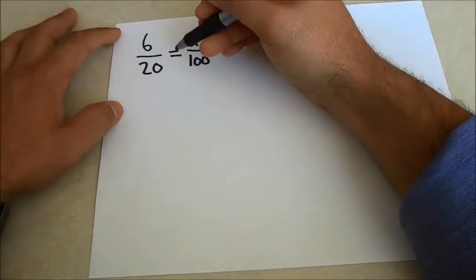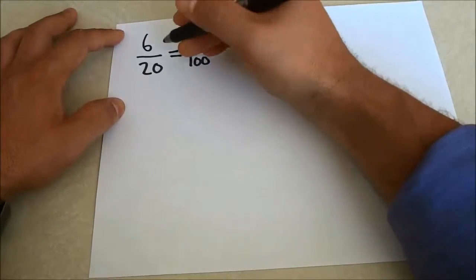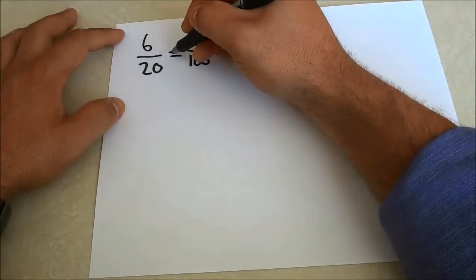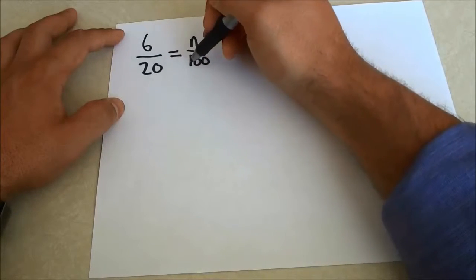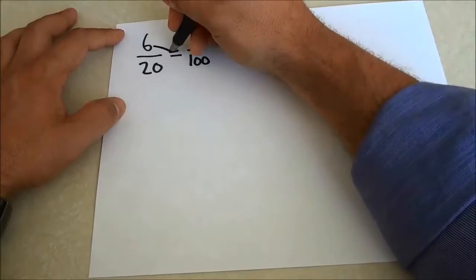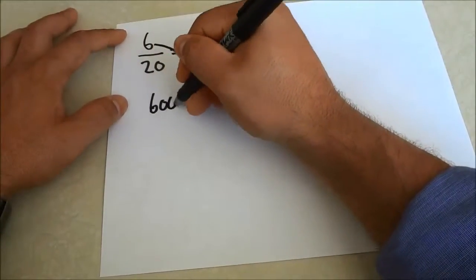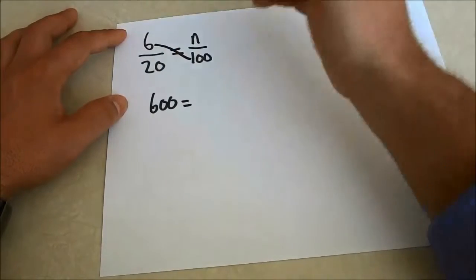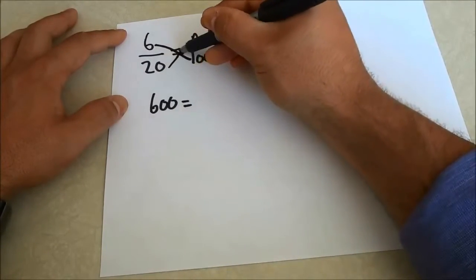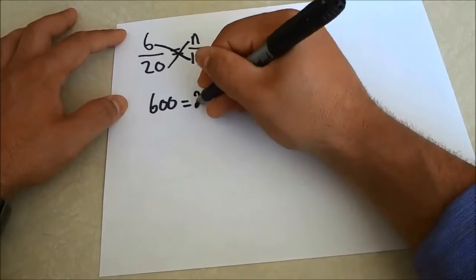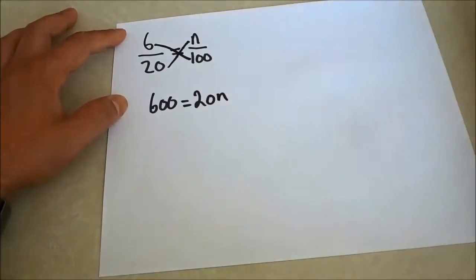In order to find this out I need to cross multiply. So I'm going to take the 6 and multiply it by 100 because I'm going across like that. So 6 multiplied by 100 gives me 600 which is equal to 20 multiplied by n. So 20 multiplied by n is equal to 20n.